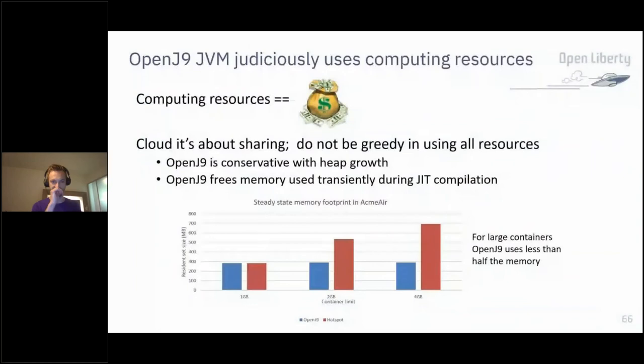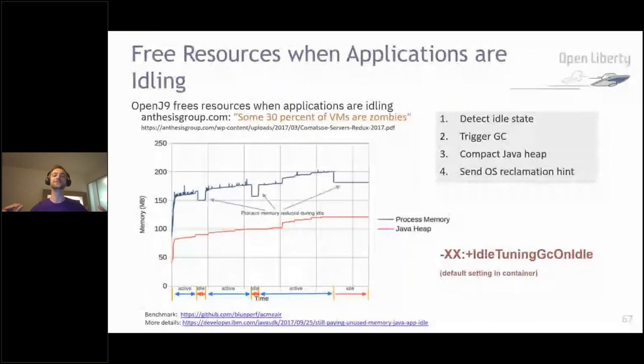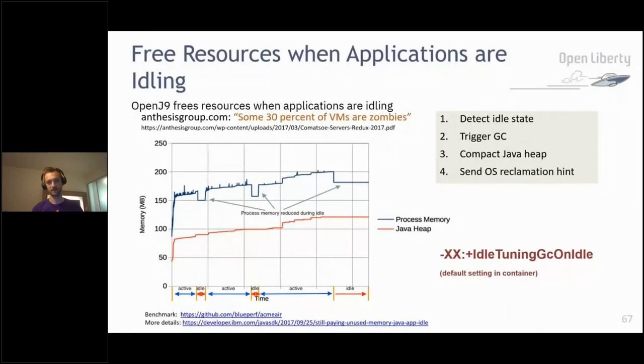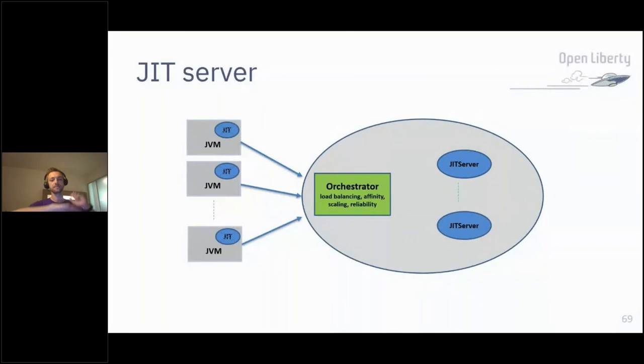Quickly through the last sections — idle tuning: if you're not using the resources on the JVM, it can basically go into an idle state and reduce memory usage. When we're paying for compute that might not save us money directly, but it will save energy — which is the most important thing to me. The JIT server allows you to put different compilation servers spread around, which enables you to cope with constrained memory environments.